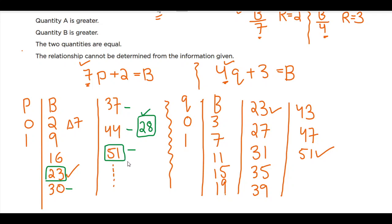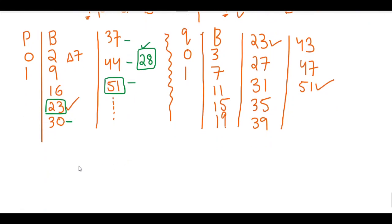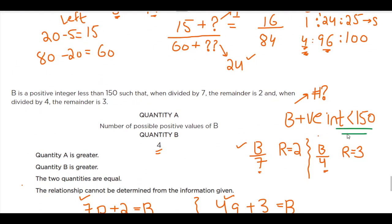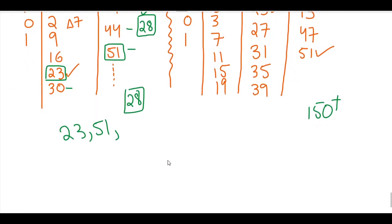Now I can do it two ways. I can simply use my calculator. My first value is 23, my second value is 51. I need to keep on adding 28 till I reach a number which is bigger than 150 because I'm not allowed to. So it's going to be 51 plus 28 is 79, plus another 28 is 107, plus a 28 is going to be 135, and plus a 28 is going to be 163, which again is not allowed.